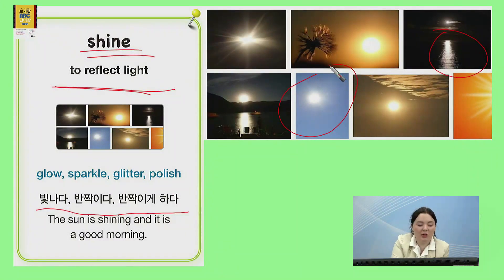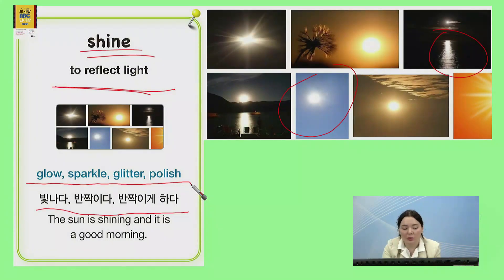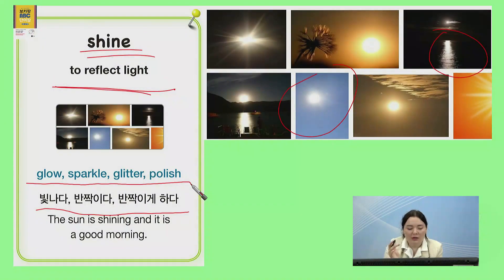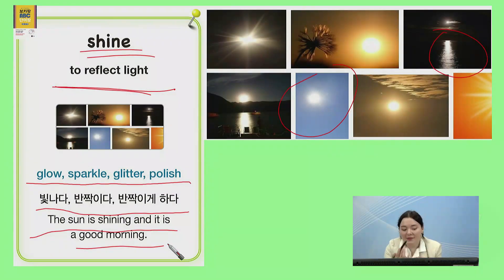Shine이랑 비슷한 말은 glow, sparkle, glitter, and polish. When you polish something, you're making it smooth so that it shines, so that it reflects. Sparkle and glitter are 반짝반짝 빛나는 거고, glow is 약간 부드럽게 — 너무 심하게 빛나는 게 아니라 약간 조금 희미하게 빛나는 거예요. So, you could say: the sun is shining and it is a good morning. 태양은 빛나고, 좋은 아침입니다.